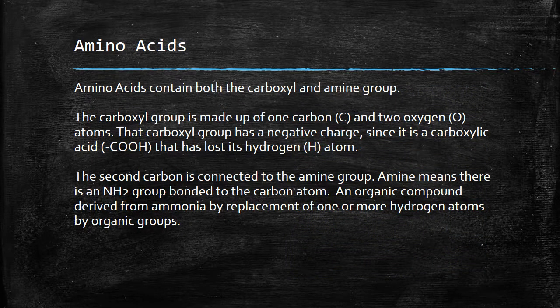Amino acids contain the carboxyl and amine group. The carboxyl group is made of one carbon and two oxygen atoms. The carboxyl group has a negative charge. Since it is an acid, it has lost its hydrogen atom. The second carbon is connected to the amine group. Amine means there is an NH2 group bonded to the carbon atom. Amine is an organic compound derived from ammonia by the replacement of one or more hydrogen atoms by the organic group.